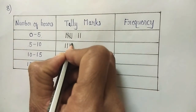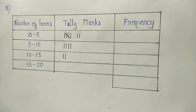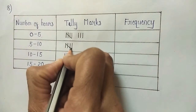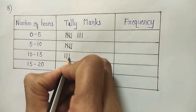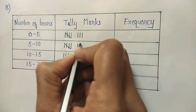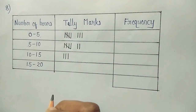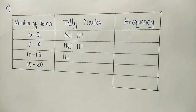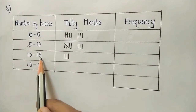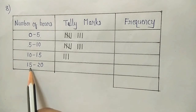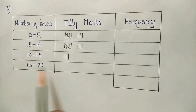Continuing with the data: 5, 5, 2, 9, 12, 8, 6, 5, 15. Now where will we include 15? It appears as both the upper limit of 10 to 15 and the lower limit of 15 to 20. Where it is the lower limit, there it will be included. So 15 is included in the class 15 to 20.